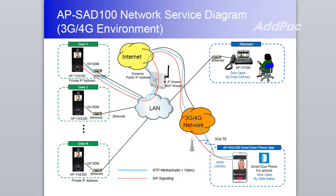APS80100 supports IP-based video door access control service over wireless, 3G, and 4G networks, so an Android mobile user can move around in or away from the company and receive the call for door access control service in any place.